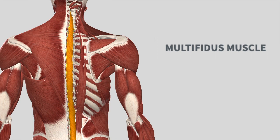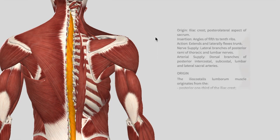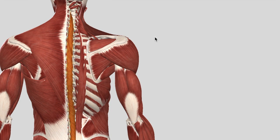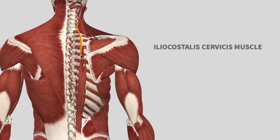Now we have a long muscle medial and right next to the vertebrae known as the multifidus. This is the longest muscle; it has no different parts — it starts at the very top and ends directly at the iliac crest. The origin is in the iliac crest or the posterior surface of the sacrum, and it inserts at the angles of the fifth and tenth ribs. The action again is to extend and laterally flex the trunk.